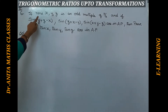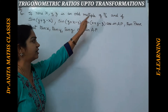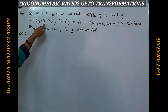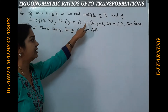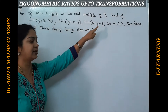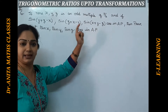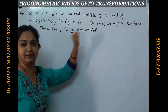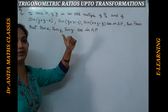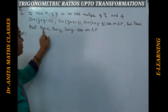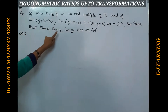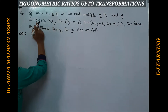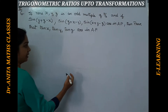In section 3, the sixth problem: if none of x, y, z is an odd multiple of 90 degrees, and if sine of (y+z−x), sine of (z+x−y), sine of (x+y−z) are in arithmetic progression, then prove that tan x, tan y, tan z are also in AP. Given this sine condition, we have to prove the tan values are in AP.